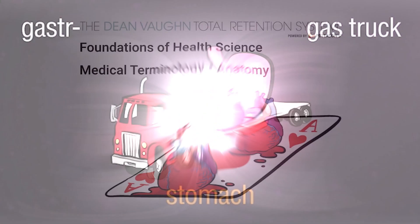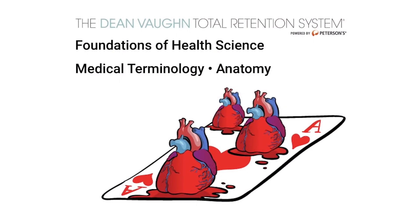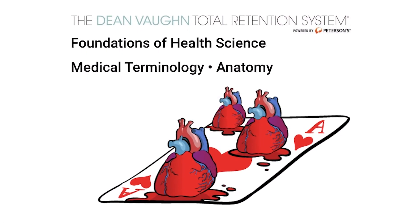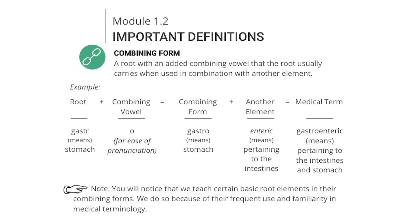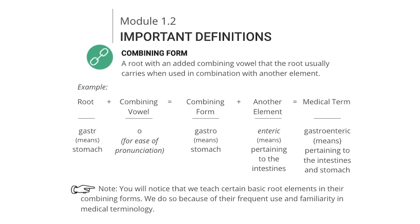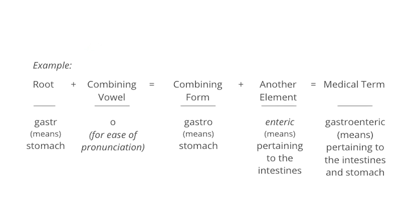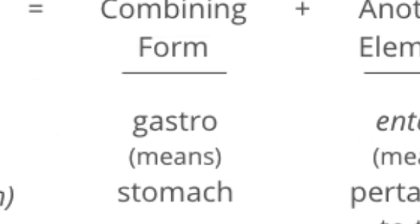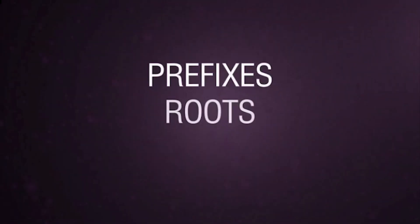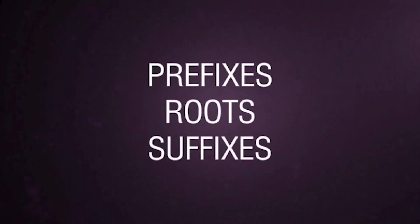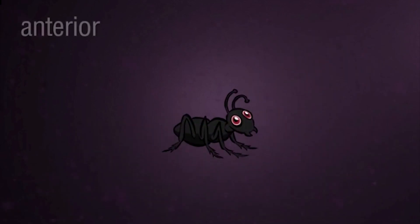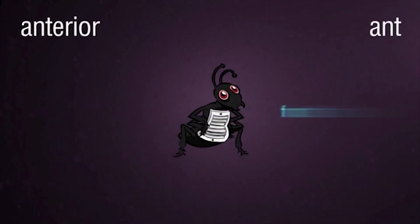This all-encompassing curriculum will make it easy for your students to learn and remember medical terminology, structure, and function. 150 universal medical terms including prefixes, roots, and suffixes, anatomical terms, locations, positions, and more.